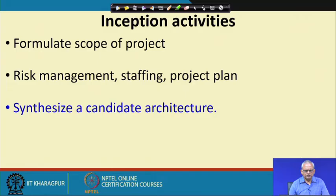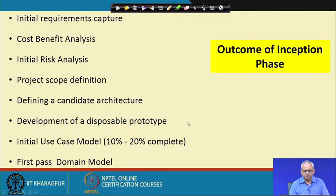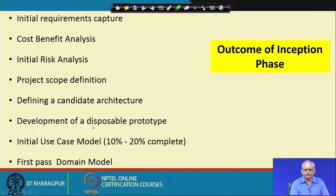During inception, the scope of the project is determined — that is, the features. Plan documents like risk management, staffing, and project plan are made, and an overall architecture is determined based on project requirements. The outcomes of the inception phase include: initial requirements capture, cost-benefit analysis, risk analysis, project scope definition, defining the candidate architecture, and development of a disposable prototype to study different architectures, along with an initial use case model and first-pass domain model.